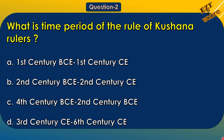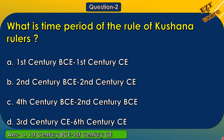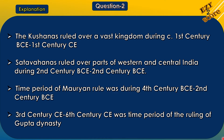Question 2: What is the time period of the rule of Kushana rulers? Options: A. 1st century BCE to 1st century CE, B. 2nd century BCE to 2nd century CE, C. 4th century BCE to 2nd century BCE, D. 3rd century CE to 6th century CE. The correct answer is option A, 1st century BCE to 1st century CE. The Kushanas ruled over a vast kingdom during circa 1st century BCE to 1st century CE. Satvahanas ruled over parts of western and central India during 2nd century BCE to 2nd century CE. Mauryan rule was during 4th century BCE to 2nd century BCE, and Gupta dynasty ruled from 3rd century CE to 6th century CE.